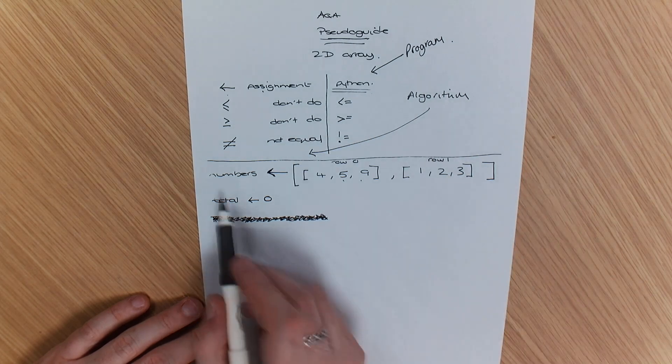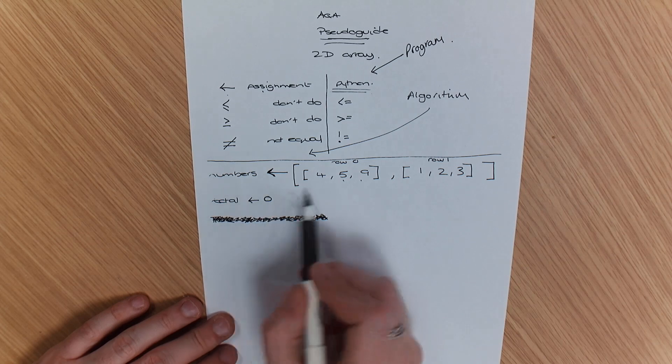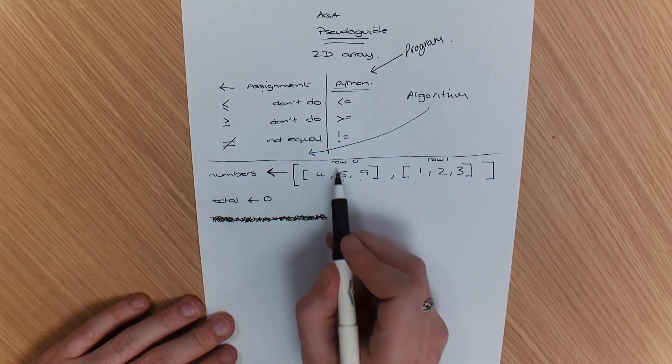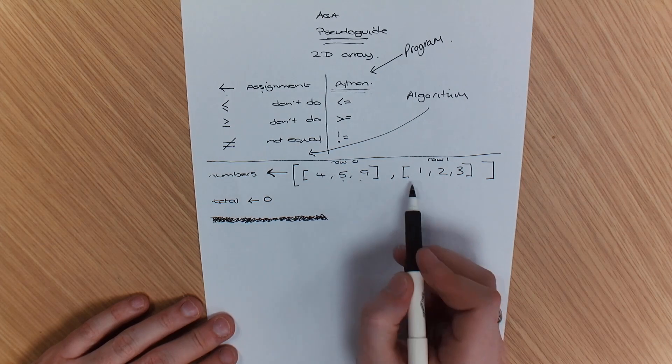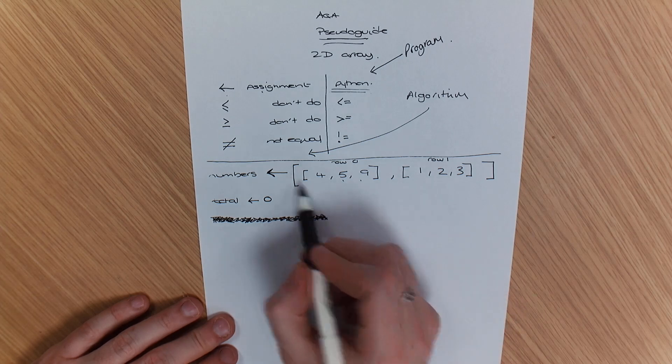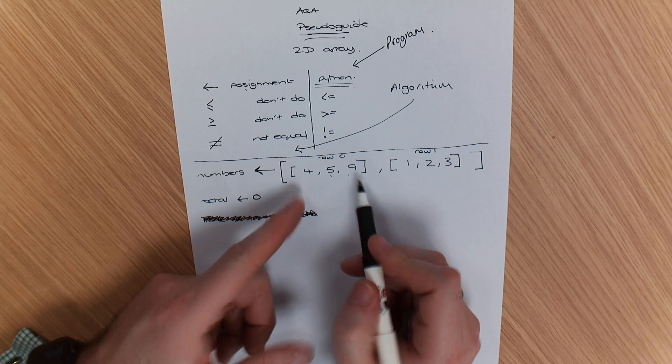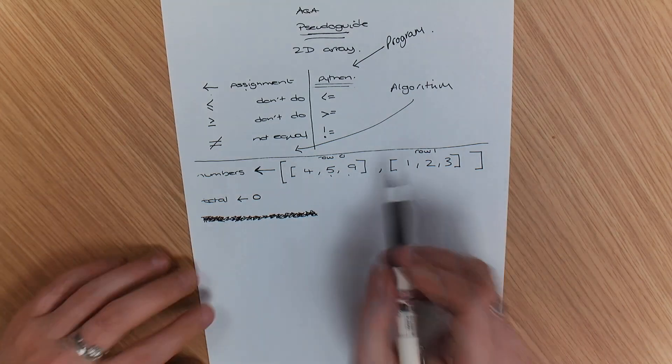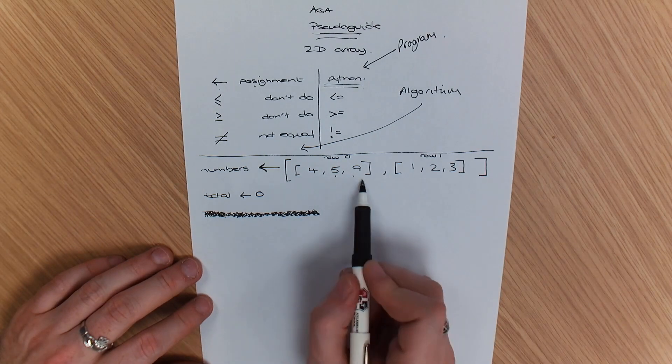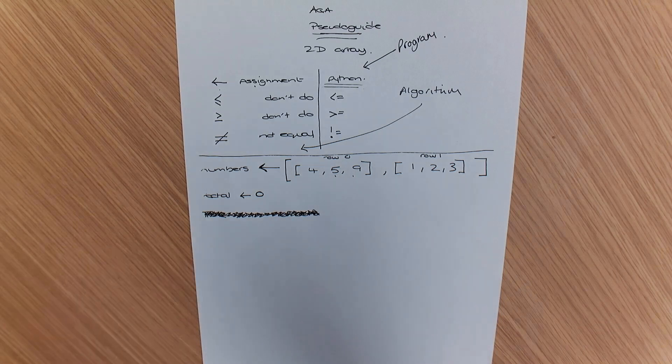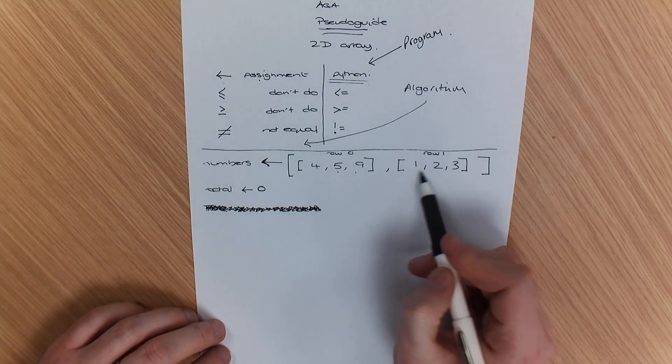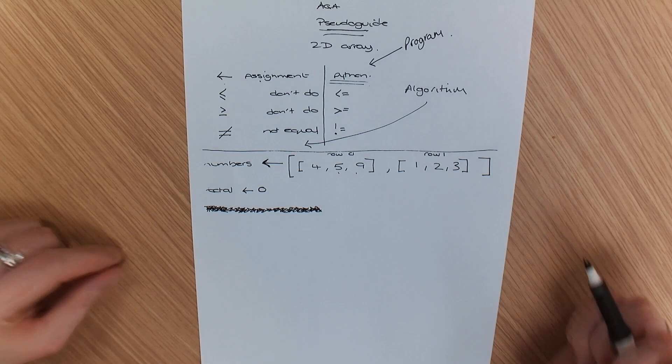Now, what I've done first is I've assigned a 2D array here. The way that it works is I've got row 0 and row 1 and I've kind of encompassed them in one array, but there's an array within an array. That's how it works. So I've got row 0 and row 1 and I've got 4, 5, 9 and I've closed that. So that's row 0 and then I've got 1, 2, 3. That is row 1.